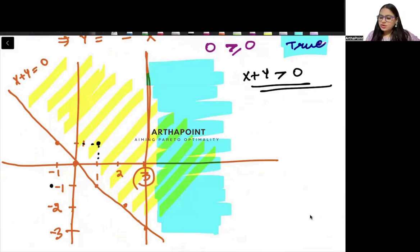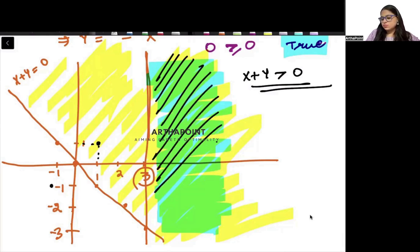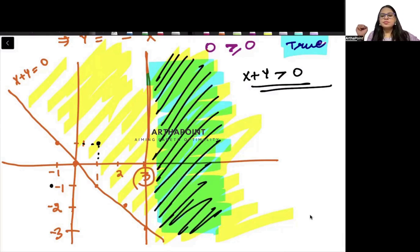So this common region that I am getting between yellow and blue, the common region between yellow and blue that we are getting, that is my domain. So what will be your domain beta? Your domain will be this. Is this making sense? So we have gone ahead and plotted the domain.